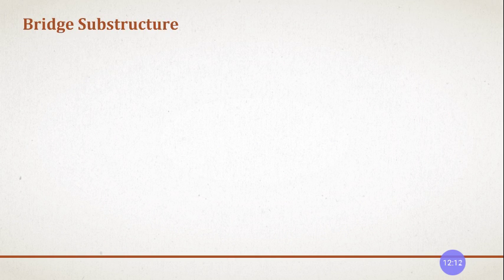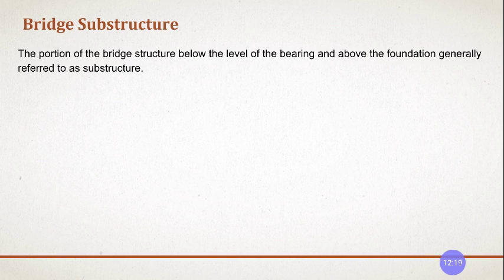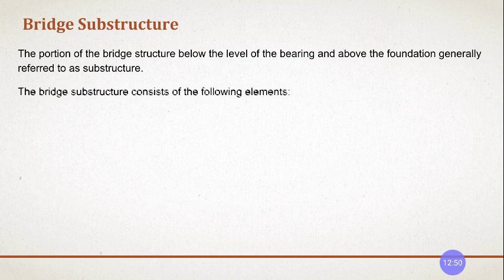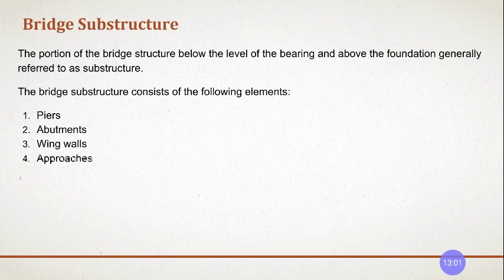Next we'll study various substructures — what is abutment, what is pier, and more. The portion of a bridge structure below the level of bearing and above the foundation is generally referred to as the substructure. Whatever is below the bearing and above the foundation is called the substructure. The first component is piers, next is abutments and wing walls, and approach.